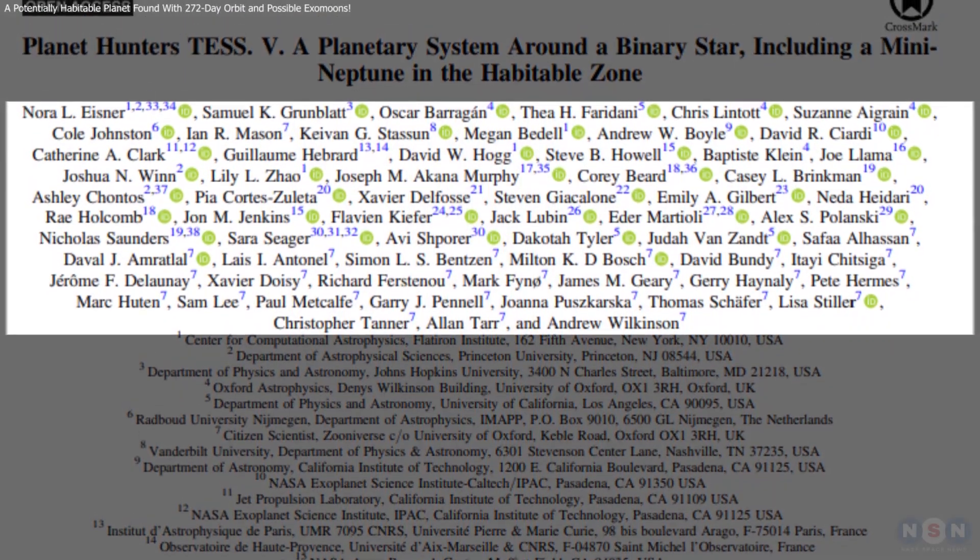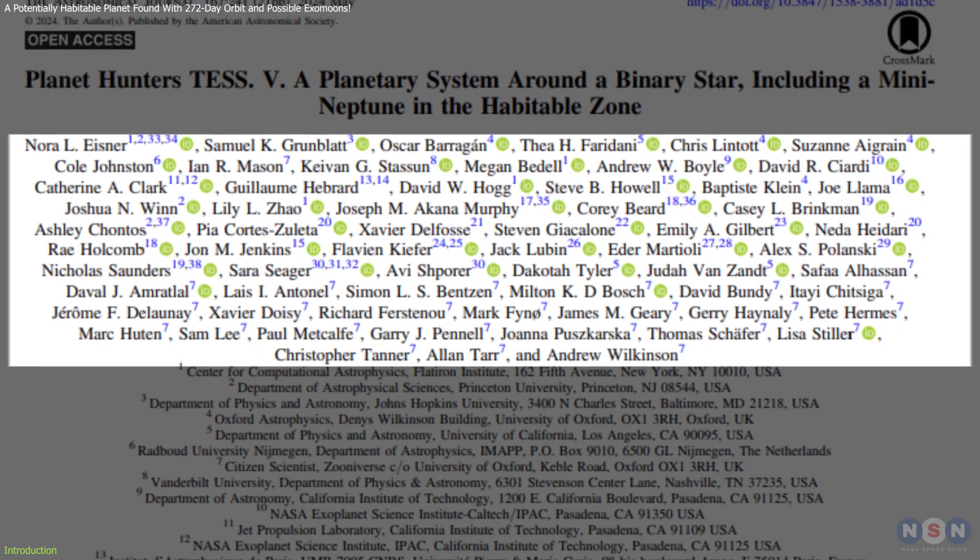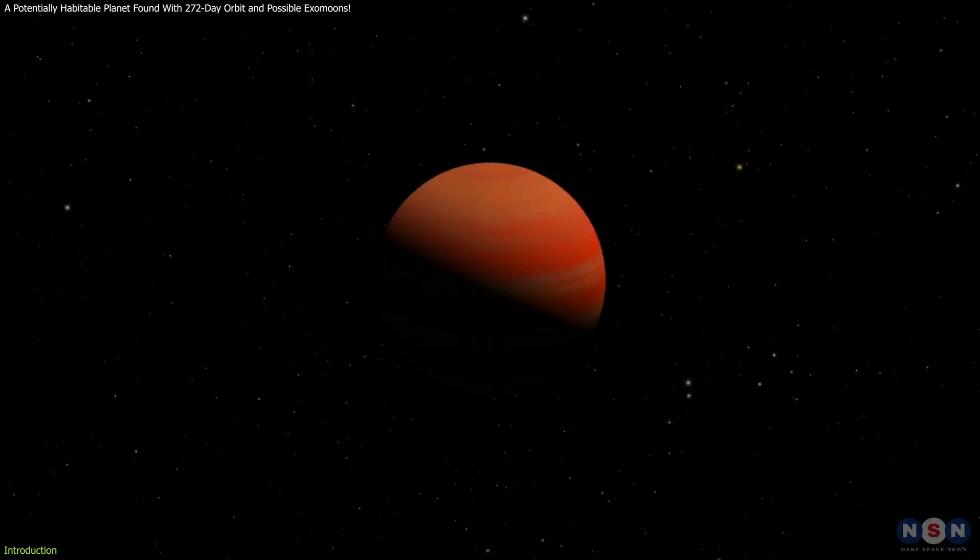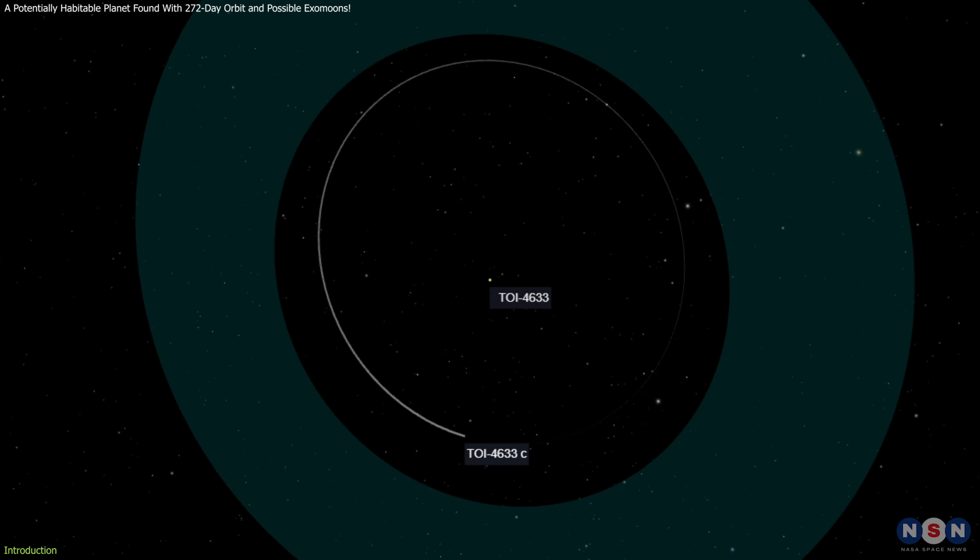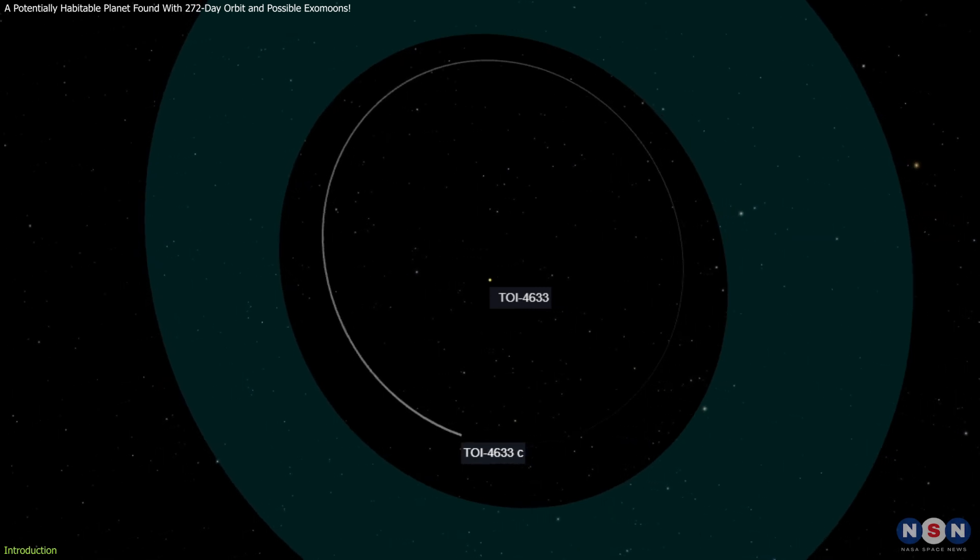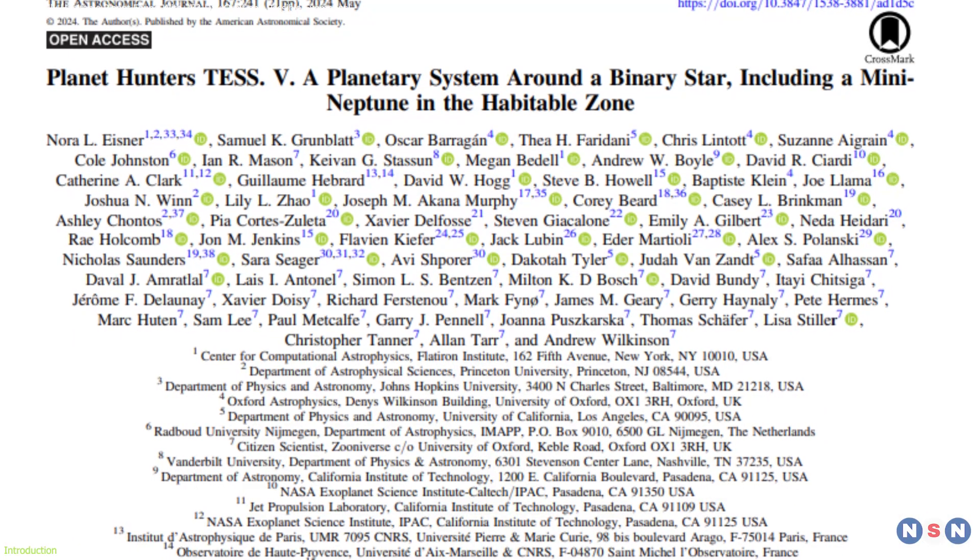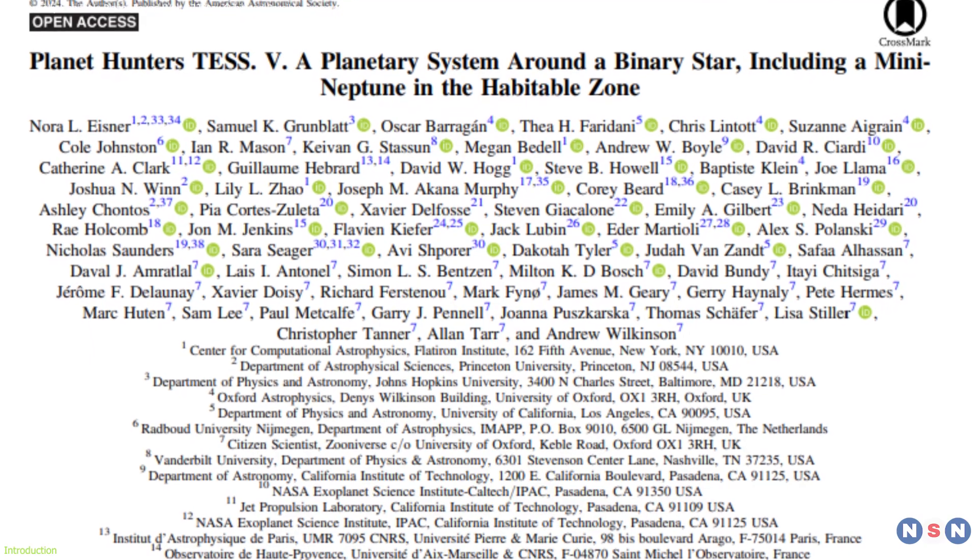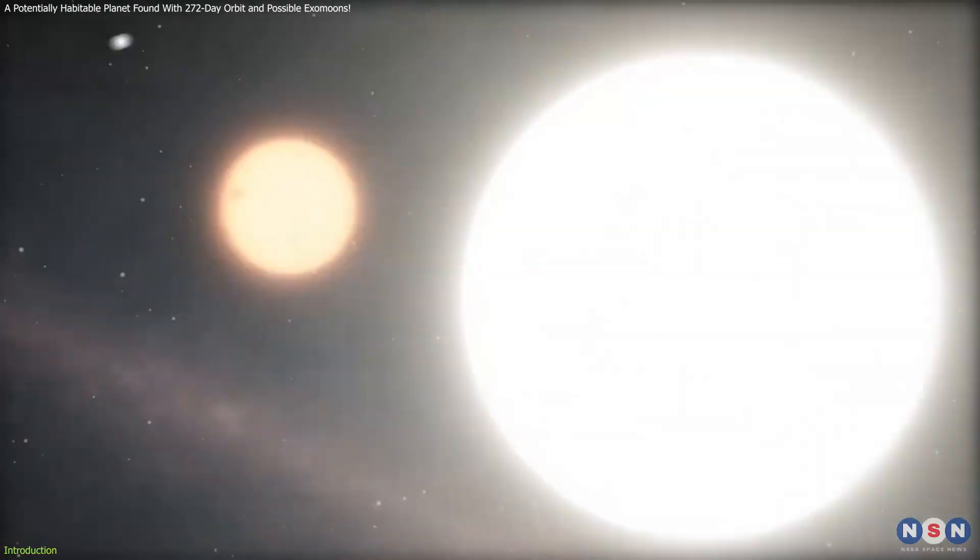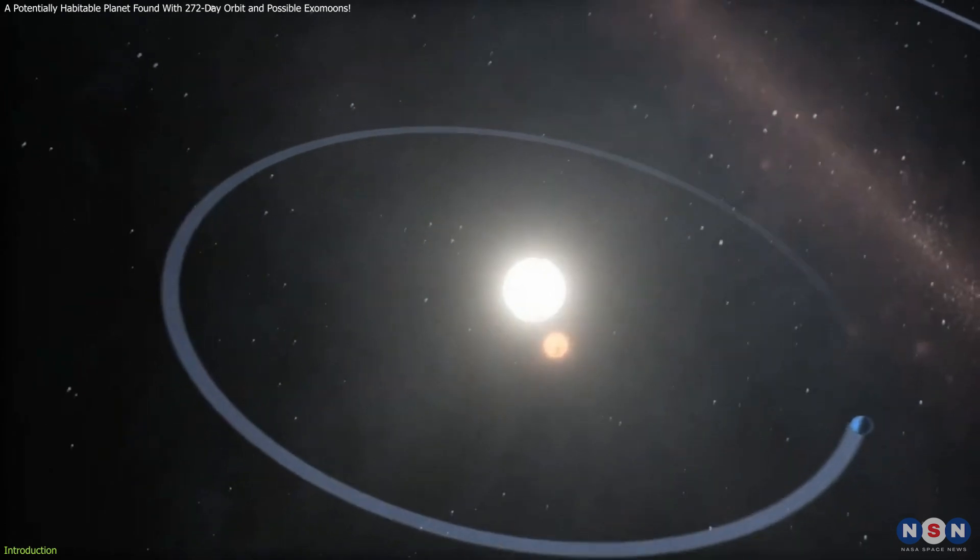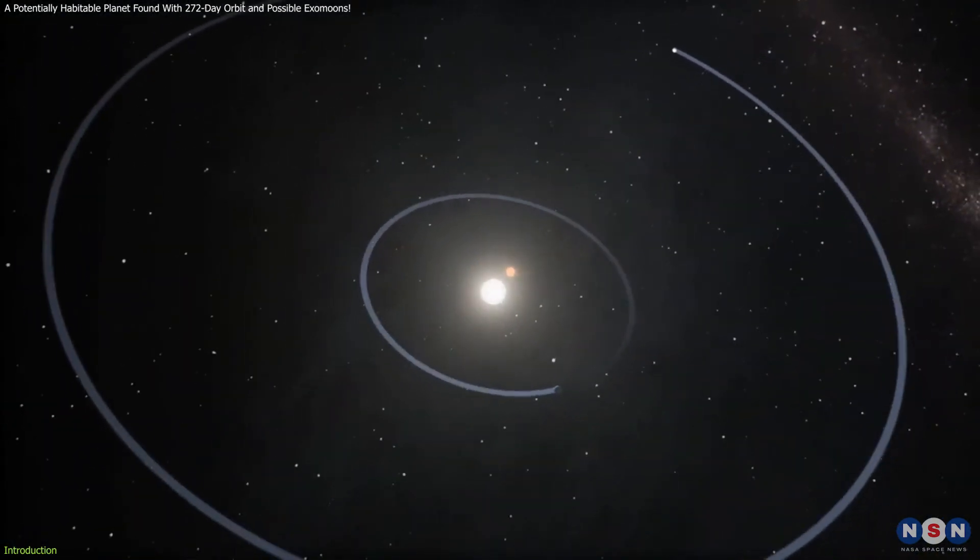A team of astronomers, alongside dedicated citizen scientists, has discovered a Neptune-like exoplanet located in the habitable zone of a binary star system. This discovery is a significant milestone in exoplanetary research, offering new insights into planetary formation and stability in multi-star systems.